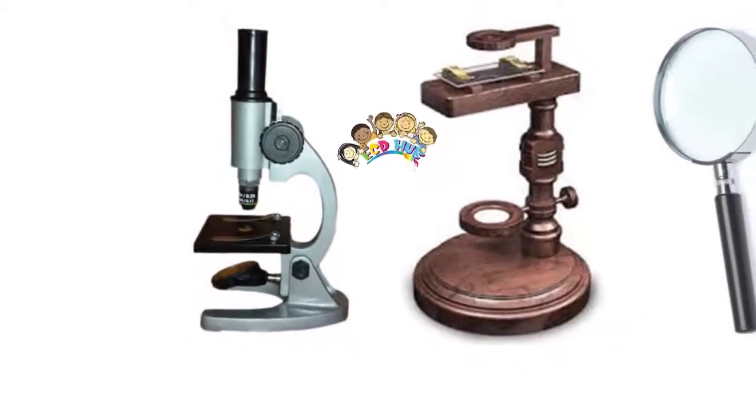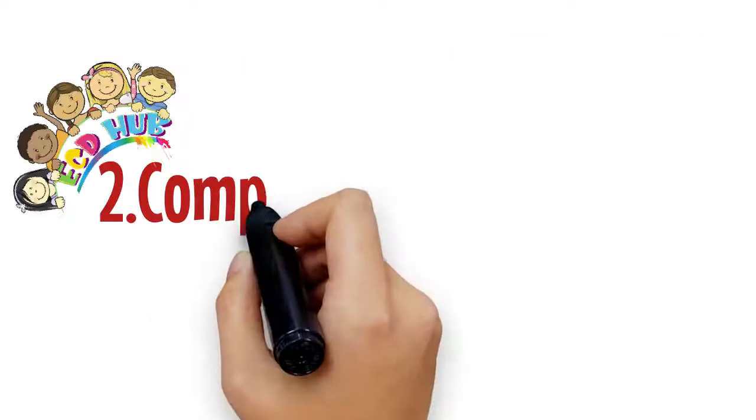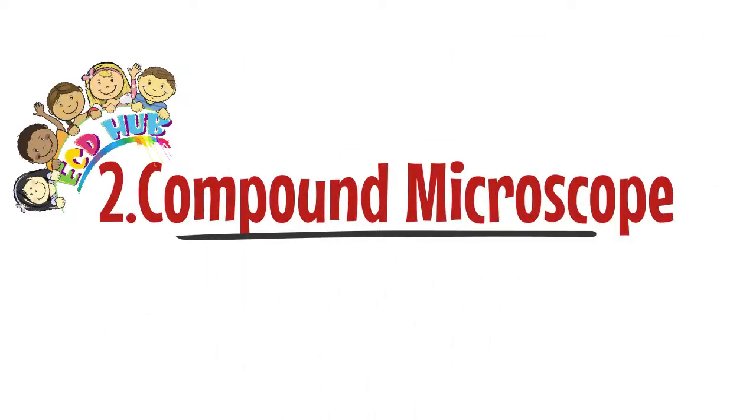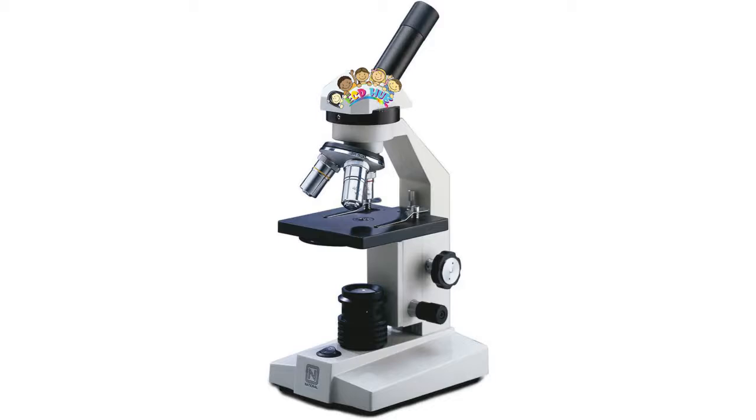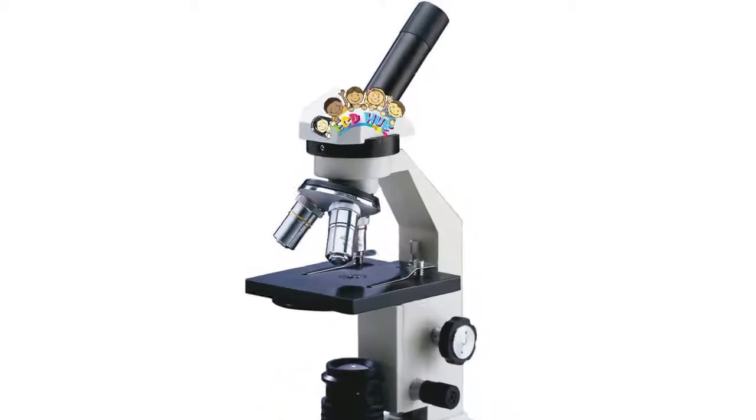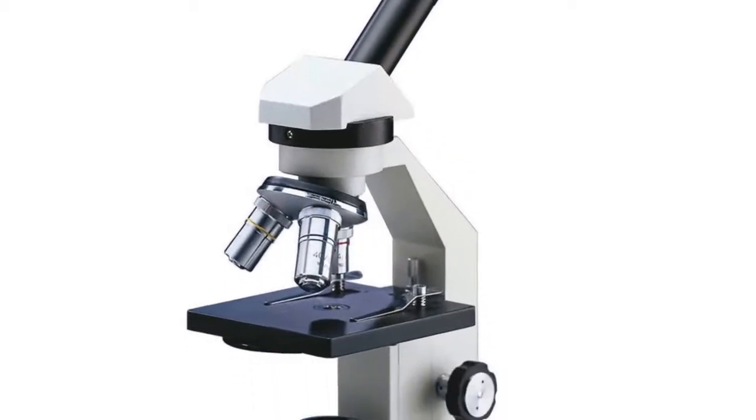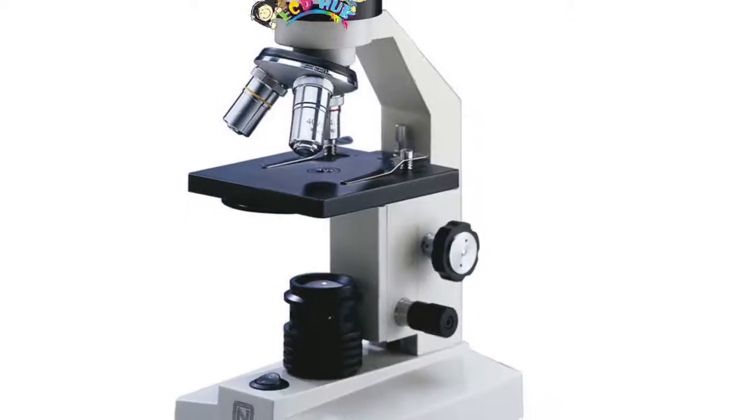The second is compound microscope. With two lenses, the compound microscope offers better magnification than a simple microscope. The second lens magnifies the image of the first.